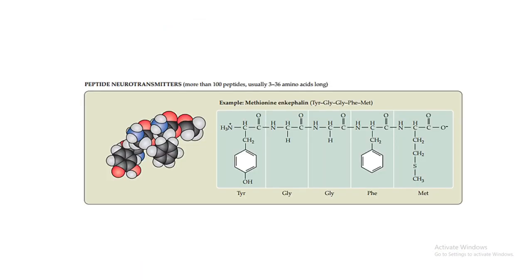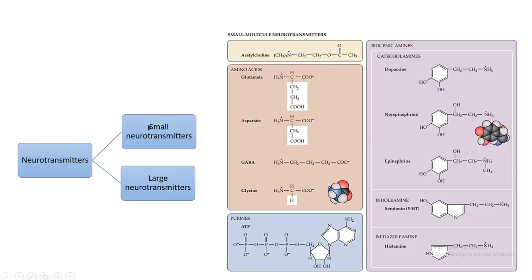Coming to the classification of neurotransmitters. Neurotransmitters can be classified into two groups: small neurotransmitters and large neurotransmitters. The small neurotransmitters, as the name indicates, are small single molecules, whereas large neurotransmitters are polymers of particular subunits. Examples of small molecule neurotransmitters include acetylcholine, certain amino acids and their derivatives.